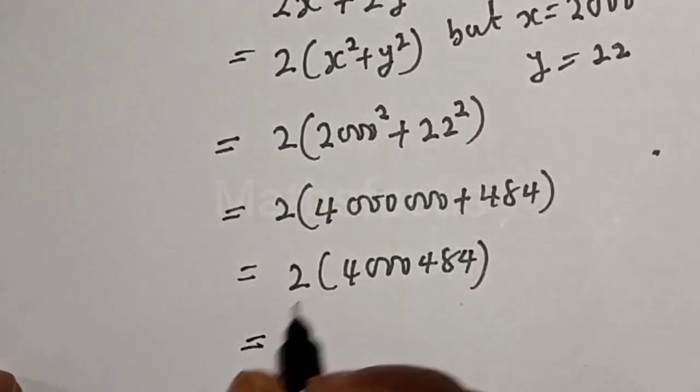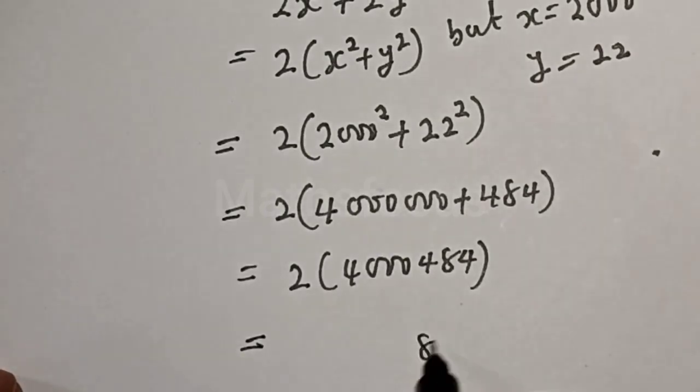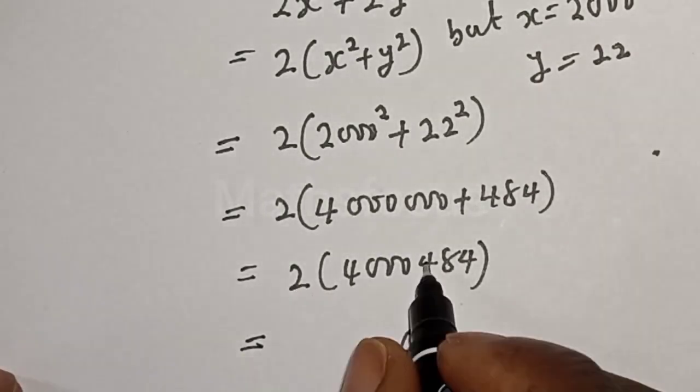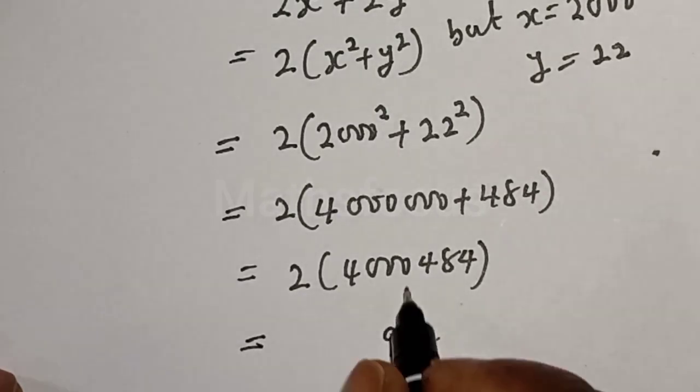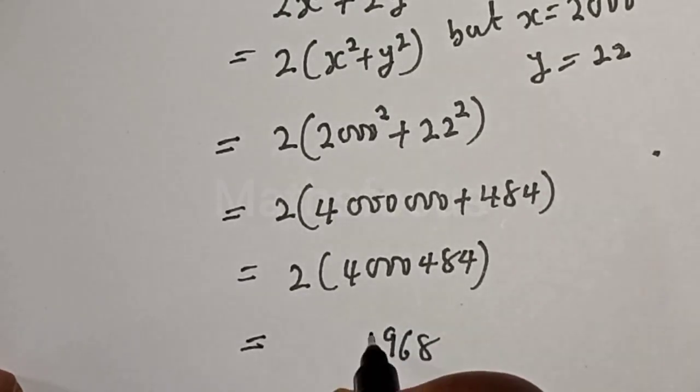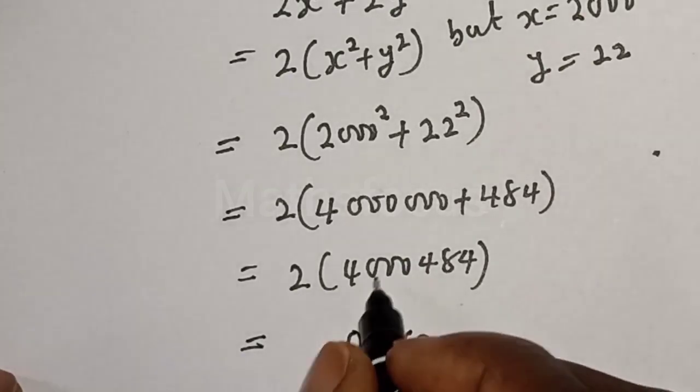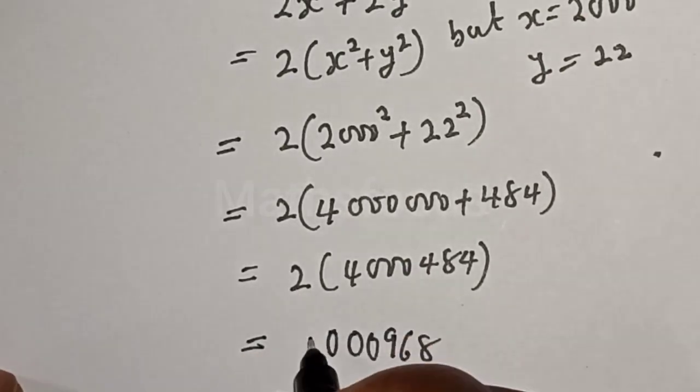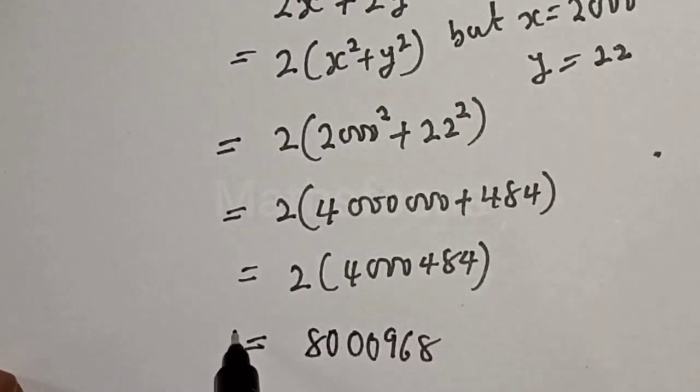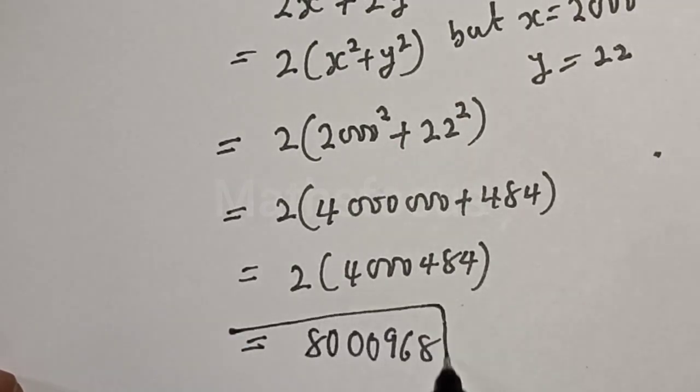Now let's multiply by 2. This equals 2 times 4 is 8, 2 times 8 is 16 (write 6, carry 1), 2 times 4 is 8 plus 1 is 9. The zeros remain zeros, and 2 times 4 is 8. This is the final answer: 8,000,968.